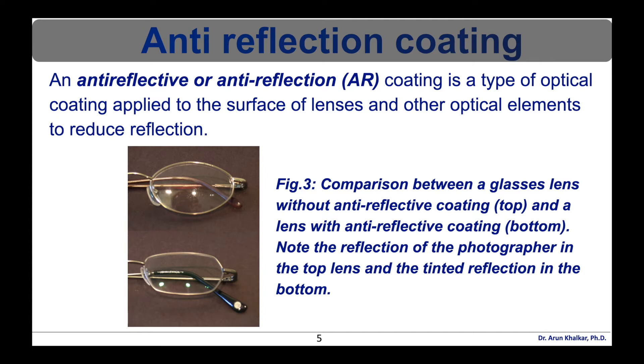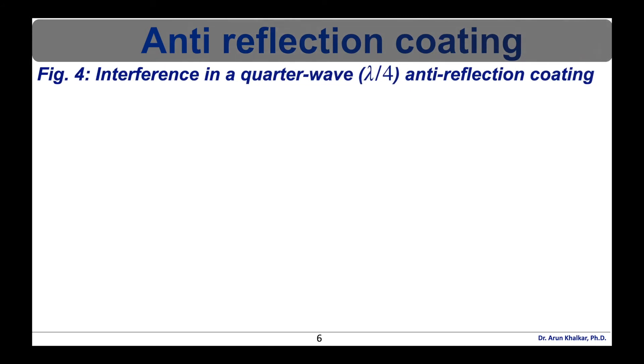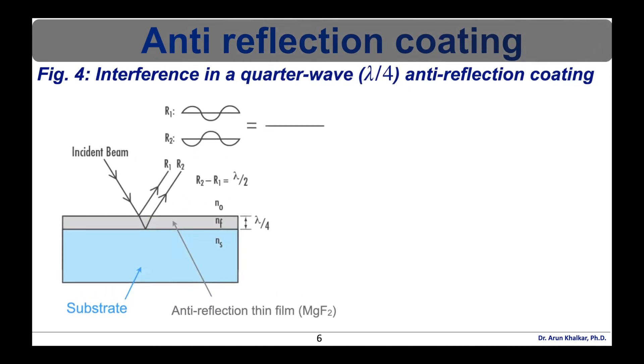Anti-reflective coatings are used in a wide variety of applications where light passes through an optical surface and low loss or low reflection is desired. Examples include anti-glare coatings on corrective lenses and camera lens elements and anti-reflective coatings on solar cells. Now consider a substrate is coated with anti-reflection thin film. Let's say magnesium difluoride.